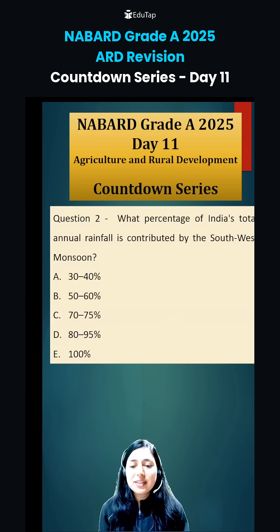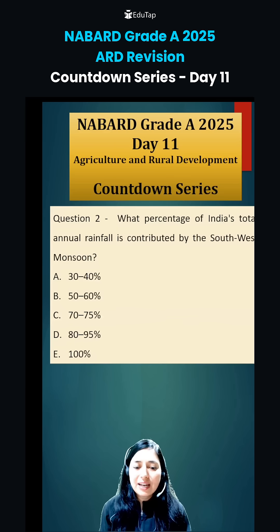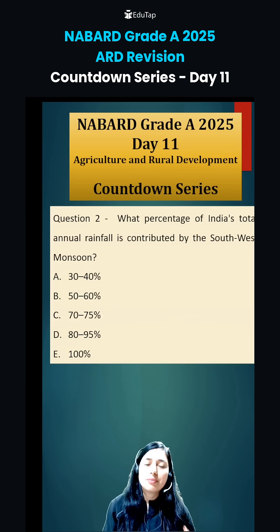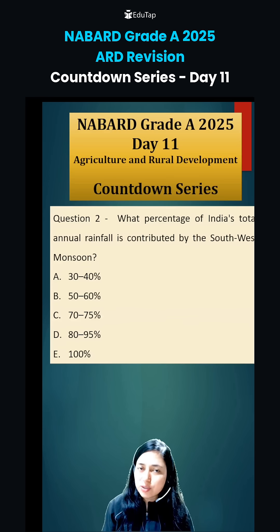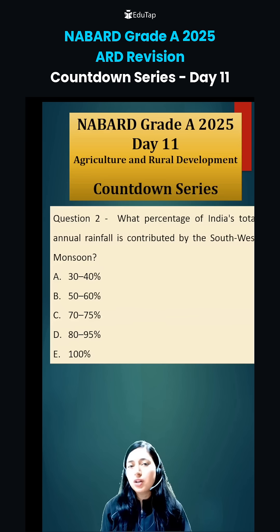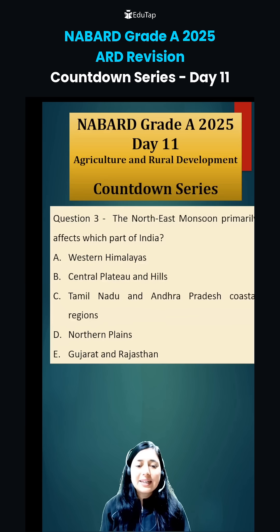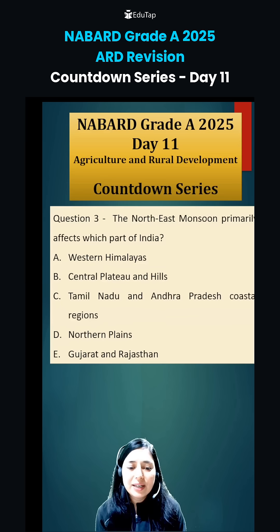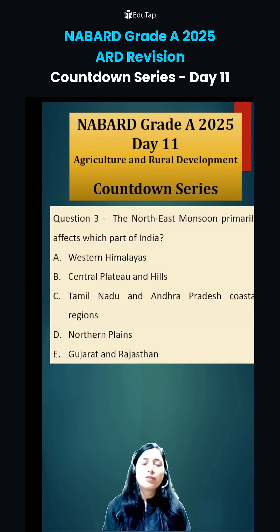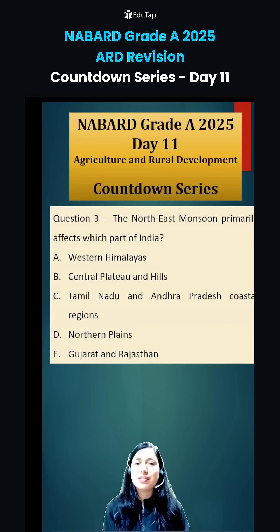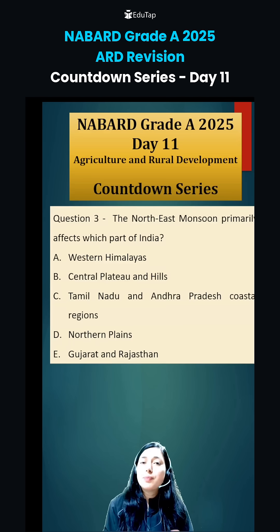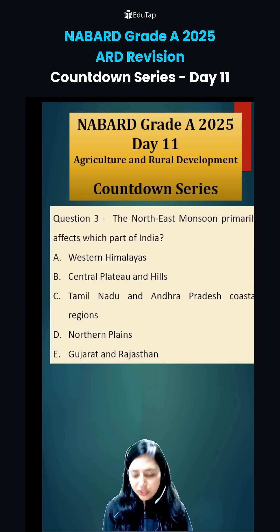Next question: what percentage of India's total annual rainfall is contributed by the southwest monsoon? Very important — this question has already been asked before regarding the southwest monsoon. You have to let me know the answer. Third question: the northeast monsoon primarily affects which part of India? Students, the southwest monsoon and northeast monsoon are important — their arrival, their onset is important, and then which part they affect — again, very important.